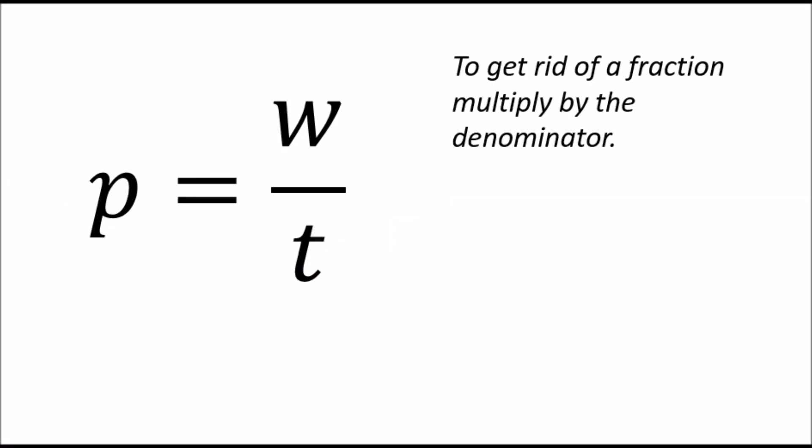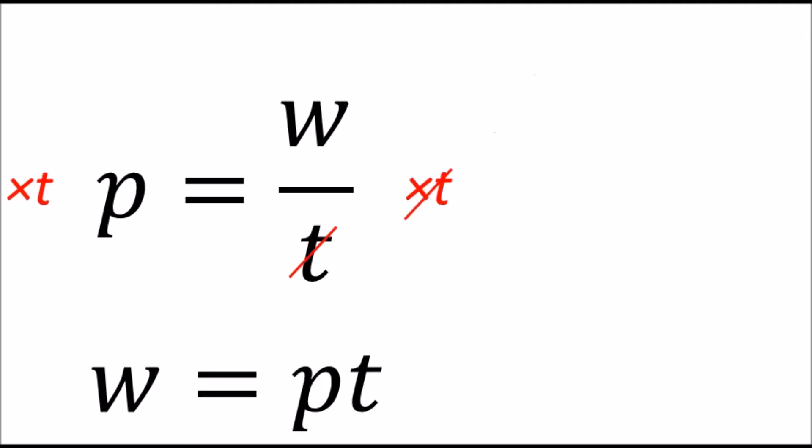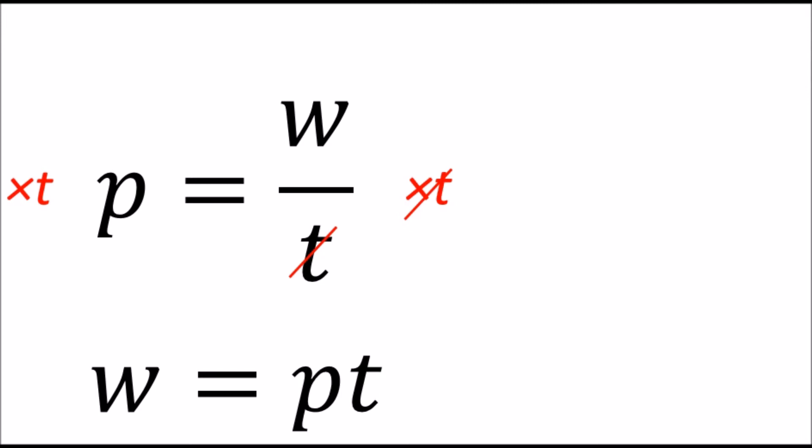But what if we want to find the denominator, in this case, the little t here? Well, we start the same way. We multiply both sides by the denominator, and that gives us exactly the same equation that we had before. Now, we want t. So it's obvious what we need to do to get t. We've got to go one more step. t is being multiplied by p, so we divide by p, and you do the same to both sides, just like we did before. So you get this. Divide both sides by p. This p cancels this one out, and we end up with t on its own. And there we are. That's the equation t equals w over p.